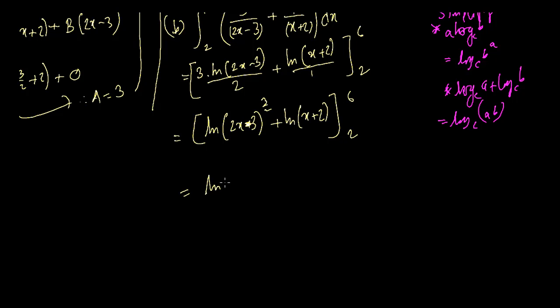So 2 to 6, so now we can write ln, if I put 6 here, 2×6 is 12, 12-3 is 9, so 9 to the power 3/2. And x+2 is 6+2, which is 8.